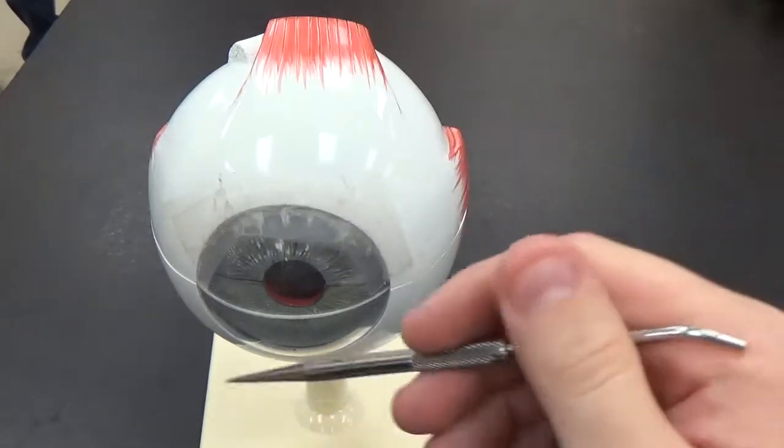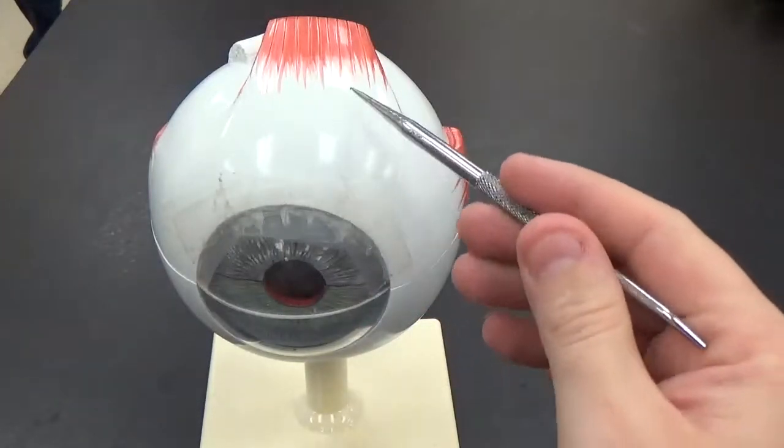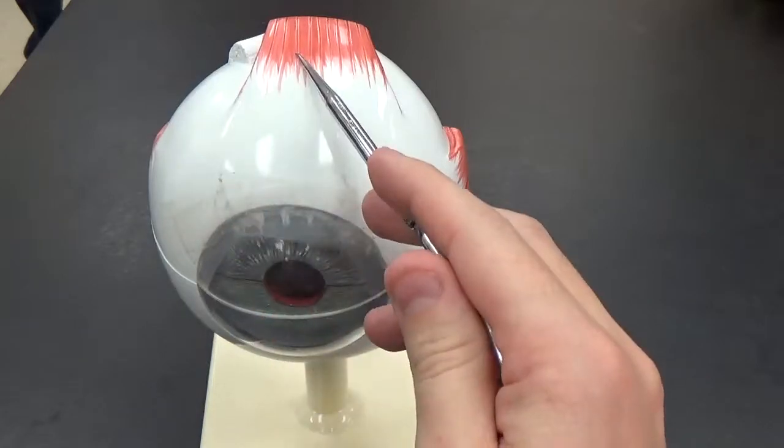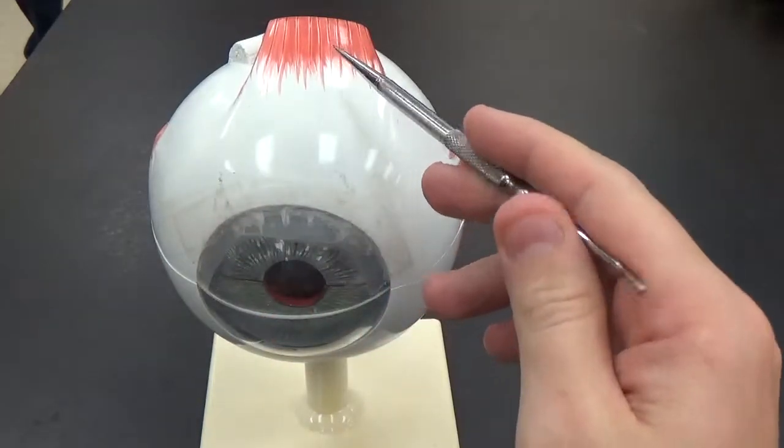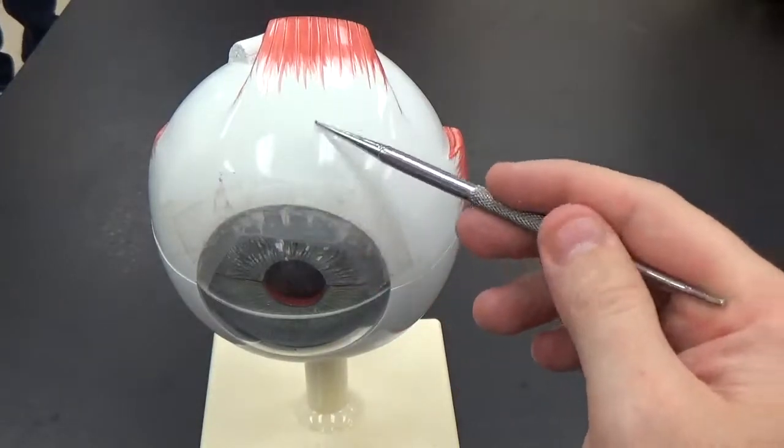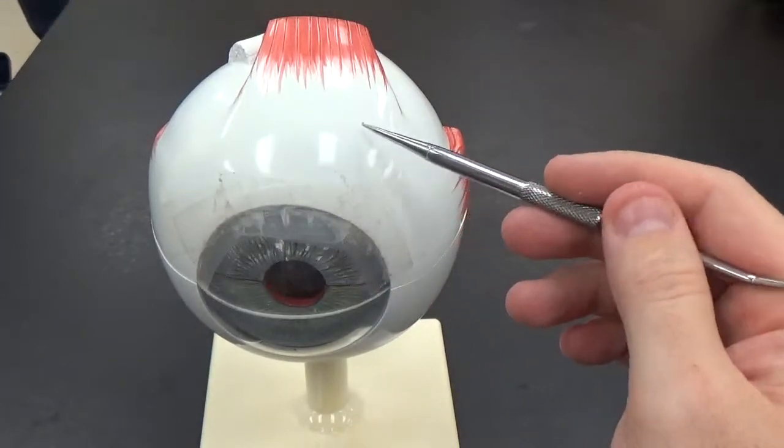Looking here at the eye, we already went over the individual muscle groups, so make sure you review that from the muscle chapter. We can see the white part of the eye. You have three layers on the eye itself.